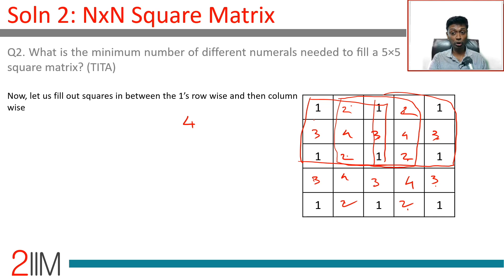So four numerals are sufficient to fill a 5×5 grid, and since we already established four is the minimum for 3×3, the minimum for 5×5 is also four.